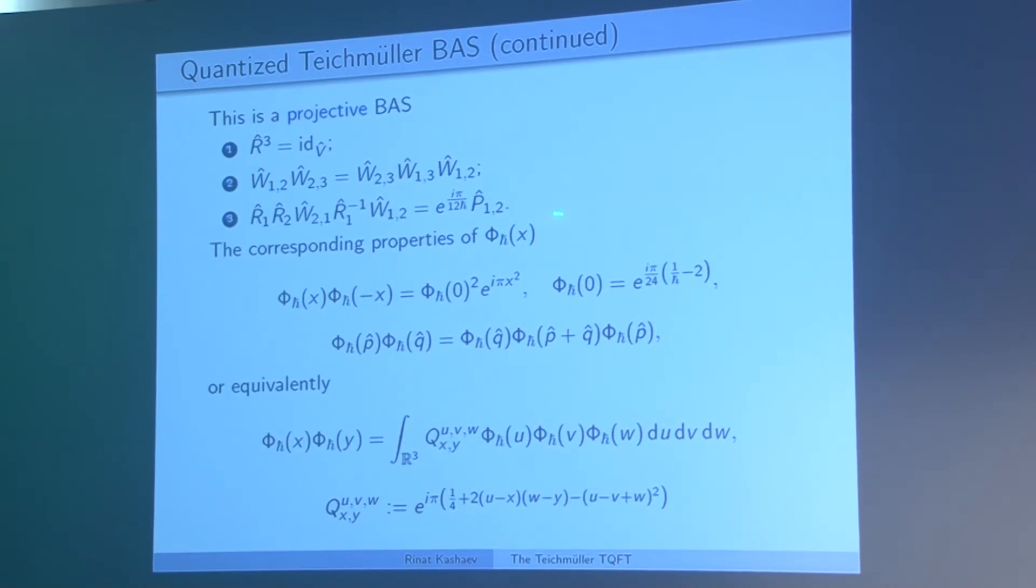As often happens in quantum theory, if we have a group of symplectomorphisms, on quantizing we typically get a projective representation. Likewise here, instead of just the basic algebraic system, we end up with a projectivized version. These relations stay intact, and in the last relation we get a complex absolute value unit factor depending on Planck constant. These two relations correspond to two relations for the Faddeev function. One is the inversion relation. This is the most important part, the five-term relation in operator form. Remember that phi of X is a function which sends real axis to the unit circle. Since everything lives on the unit circle, this is not an absolutely convergent integral, it is conditionally convergent. It should be interpreted as an identity for tempered distributions given by bounded functions.